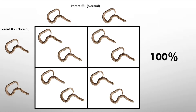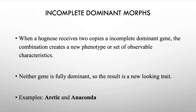Next, let's go into incomplete dominant morphs. It's kind of similar to dominant genes but not at the same time. Incomplete dominant is when a hognose receives two copies of an incomplete dominant gene and the combination creates a new phenotype — what it visually looks like. Neither of these genes are fully dominant, so the result is a new-looking animal.